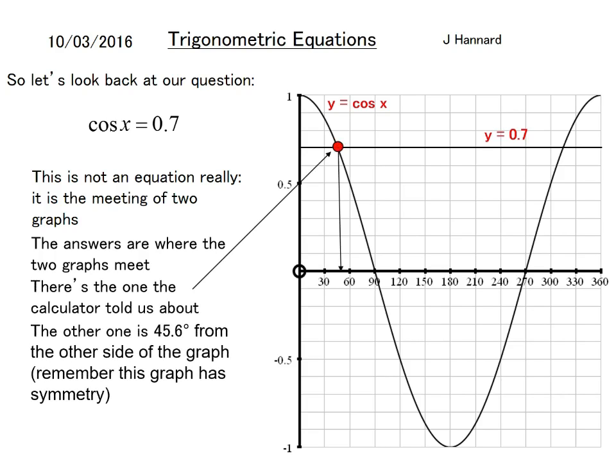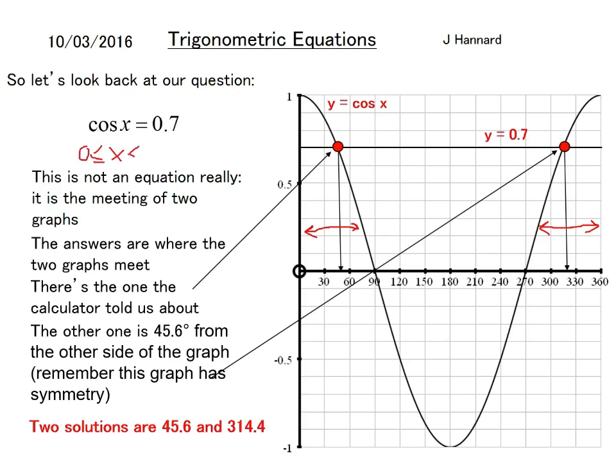The answers are where the two graphs meet. So there's the one that the calculator talked about which was about 45.6, but with using the symmetry of the graph we can do 360 minus that answer because the distance between there to there is the same as the distance from there to there. So from 0 to the answer is the same as the distance from 360 to the other answer. So there we go, the two solutions are 45.6 and 314.4.